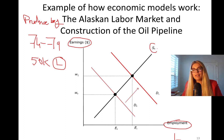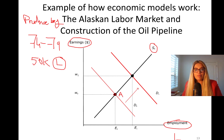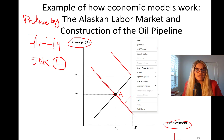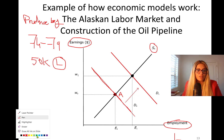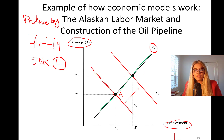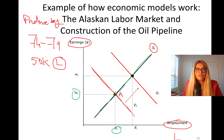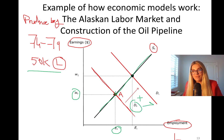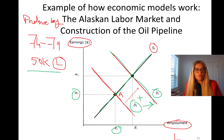This is the labor supply curve, and these are the labor demand curves. Initially we're at point A — before the oil was discovered — where the initial labor demand curve and initial labor supply curve intersect. The wage rate and employment level are set at that equilibrium. Once 50,000 workers are hired, this is an outward shift in the demand curve. Demand for labor increases from D0 to D1.